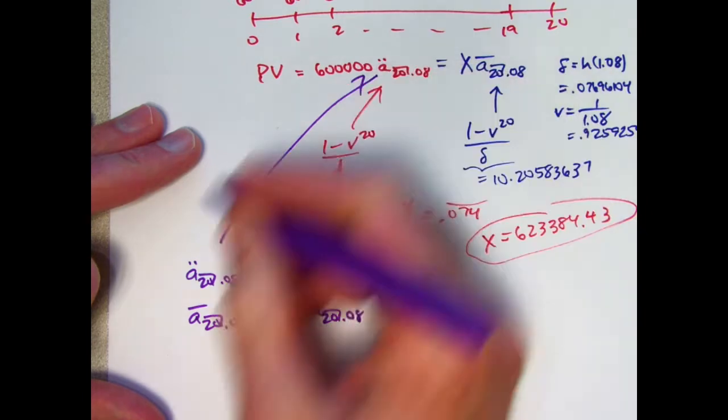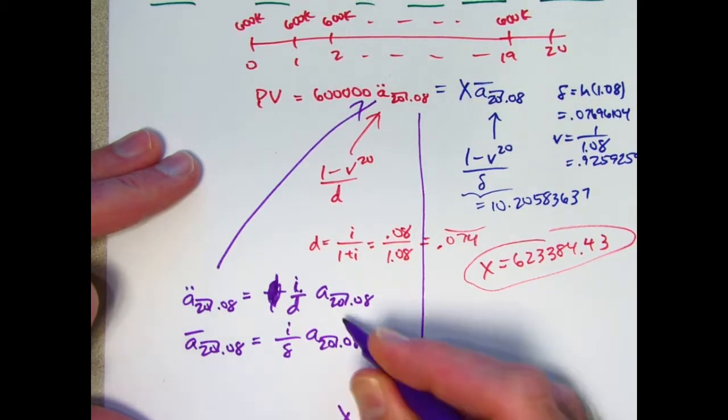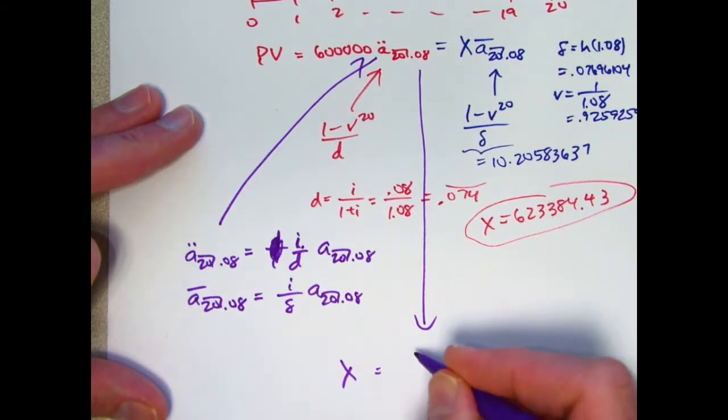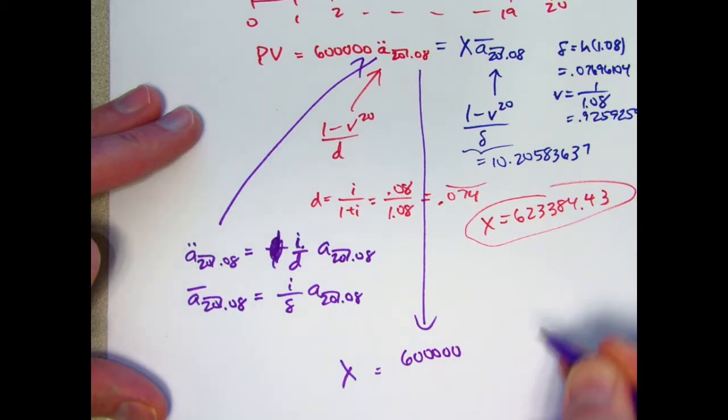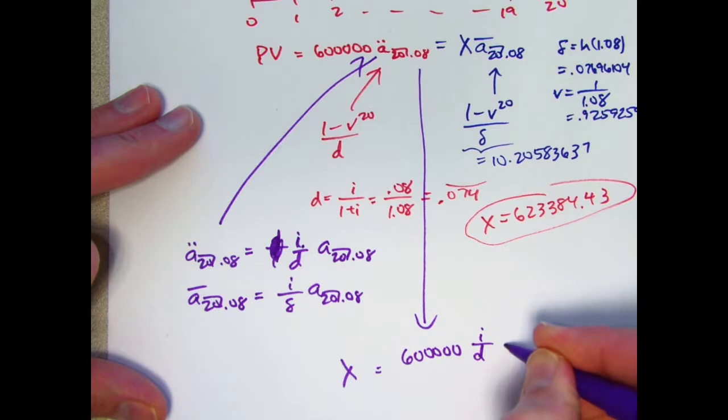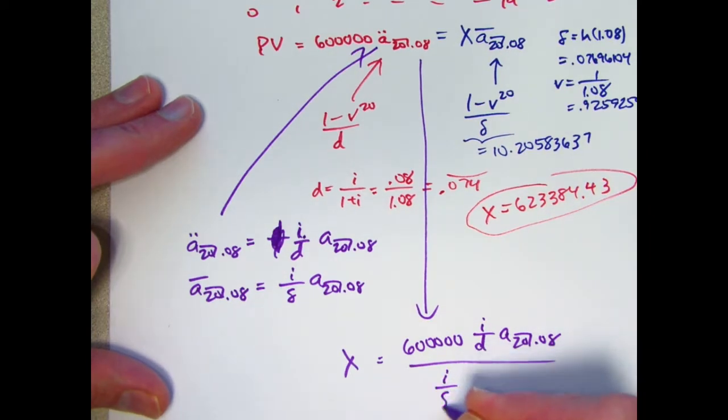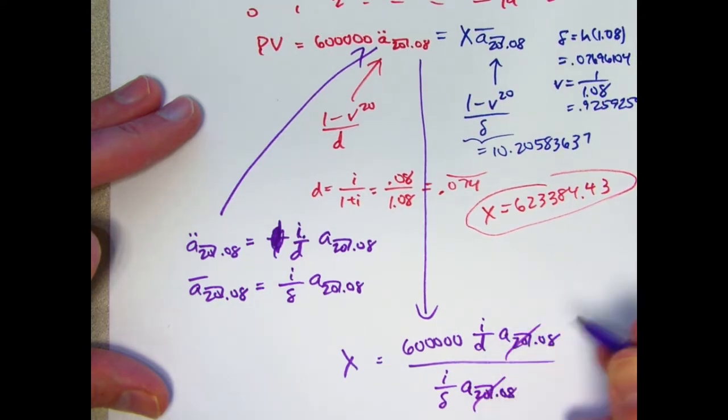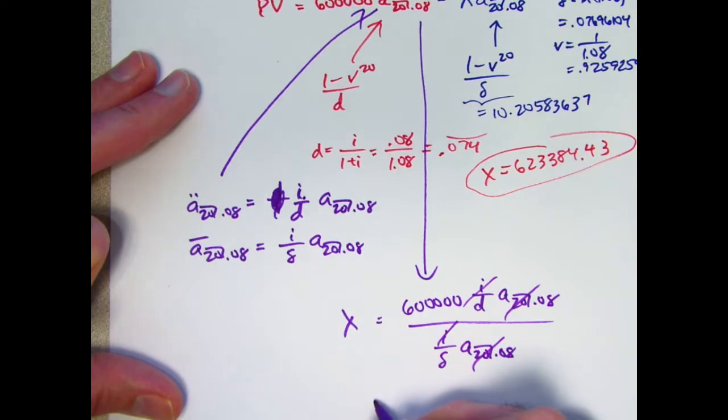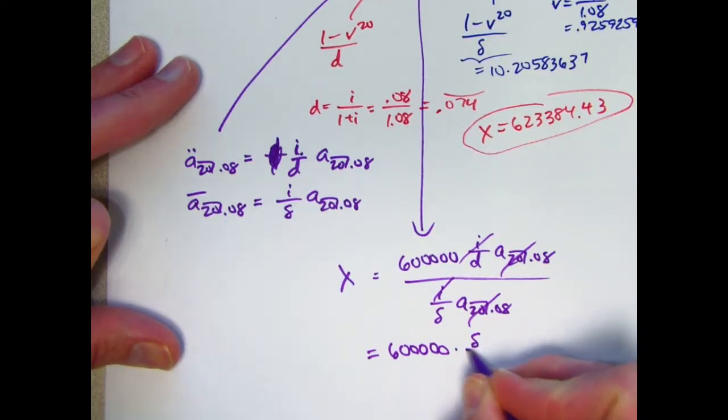Therefore, if we solve for x here right away, the a 20s cancel. x is going to be 600,000 a double dot, which is i over d times a 20, divide by a bar, which is i over delta times a 20. The a 20s cancel. The i's cancel as well. You're left with 600,000 times delta over d.